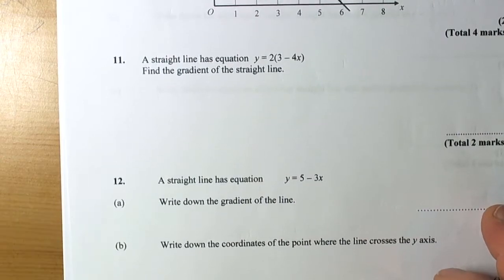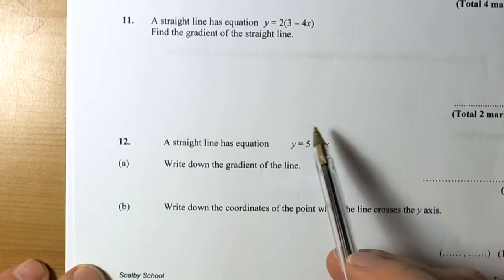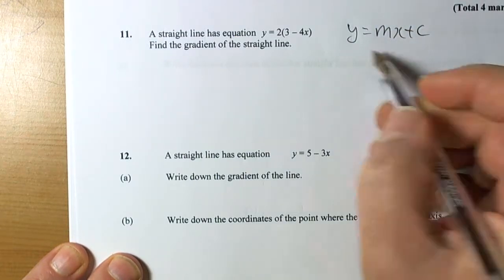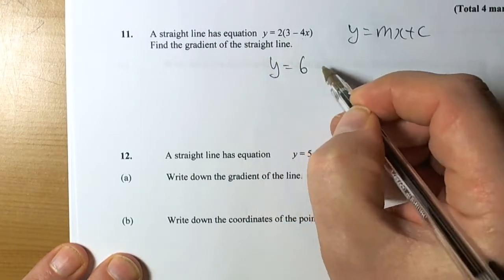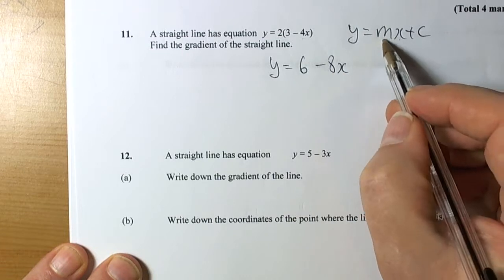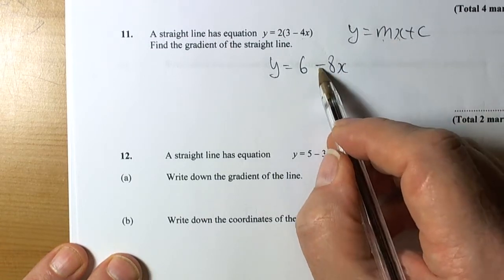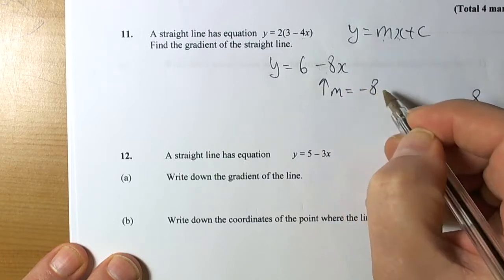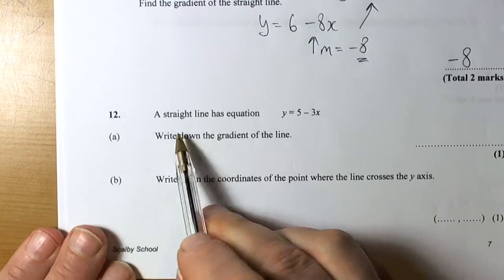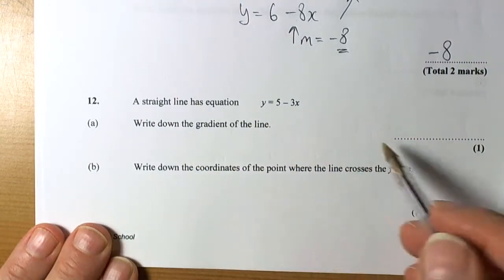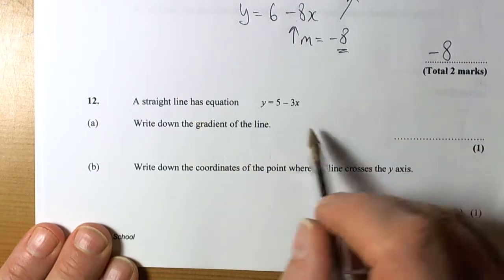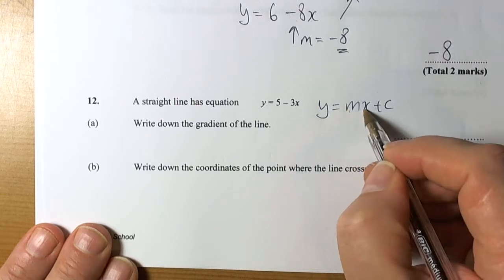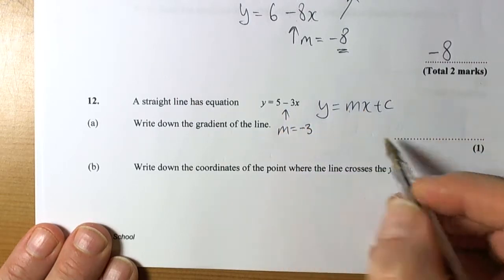A straight line has a given equation — find the gradient. We need it in the form y equals mx plus c, so multiply out the bracket: y equals 6 take away 8x. The coefficient in front of x is negative 8, so the gradient is negative 8. Another example: y equals 5 take away 3x — the number in front of x is negative 3, so the gradient is negative 3.